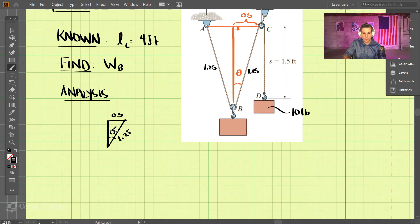and we're trying to find theta. So if we know that the sine of the angle, theta, is equal to opposite over hypotenuse, which is 0.5 over 1.25, we can then use the inverse sine there, and we find out theta is equal to 23.58 degrees.